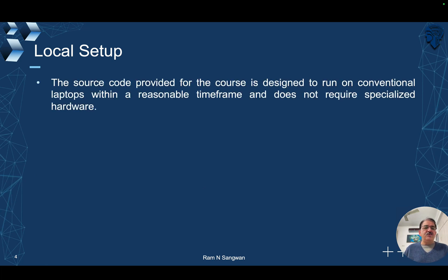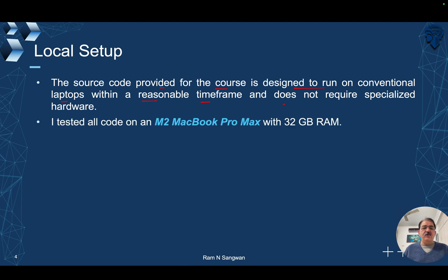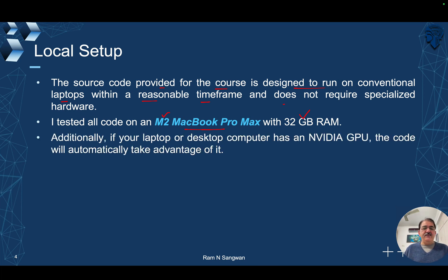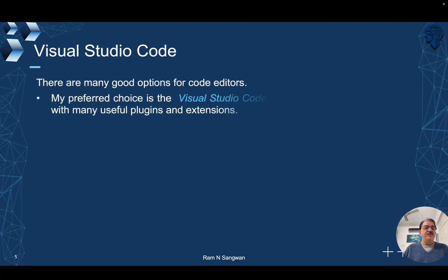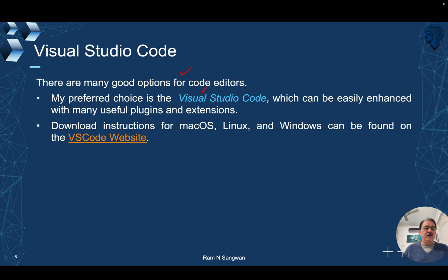For local setup, the source code provided in the repository is designed to run on a conventional laptop within a reasonable timeframe and does not require specialized hardware. All code has been tested on an M2 MacBook Pro Max with 32GB of RAM. Additionally, if your laptop or desktop has an NVIDIA GPU, the code will automatically take advantage of it. Visual Studio Code is available to download from code.visualstudio.com for Mac, Windows, and Linux.